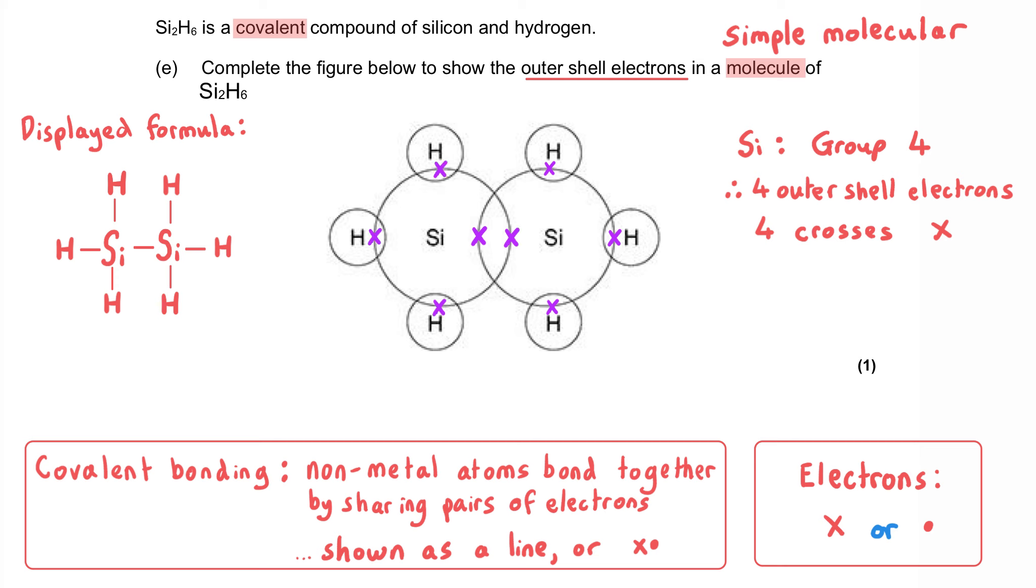And then the silicon on the left needs to be treated in the same way. It has also got four overlaps, which means it's got four covalent bonds. And you can see in the space where the two silicon atoms are meeting, in this overlap region here, I have got two crosses.